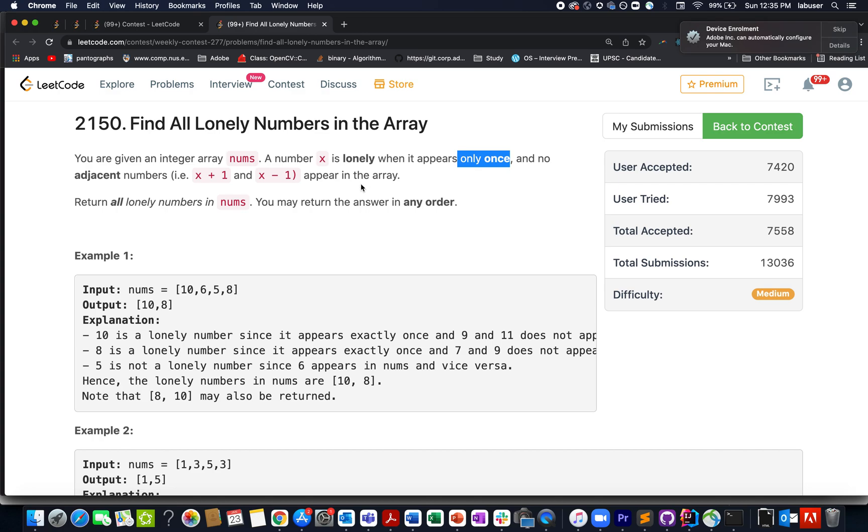be no element in the array equal to element plus one or element minus one. We need to return all such lonely numbers present in the array. The order is not mandatory; any permutation will work.